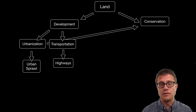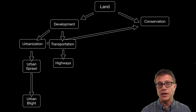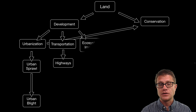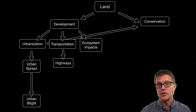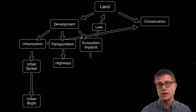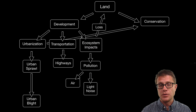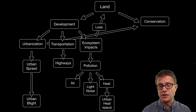As people move out they take their tax base with them, and that can lead to urban blight on the inside of the city. We are getting these ecosystem impacts. With urban sprawl we are eating up the land around the city, so there is a loss of land. We also have pollution — air pollution, light and noise pollution, and heat pollution. We see that in the urban heat islands.